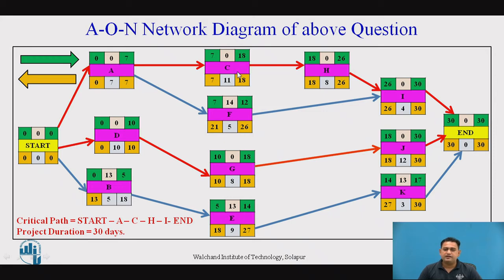Activity H starts when C finishes, so EST of H is 18. Activity I depends on both H and F, so its EST is the maximum of EFT of H (26) and EFT of F (12), giving EST of I as 26, and EFT of I as 26 plus 4 equals 30. EST of J is EFT of G = 18, so EFT of J is 18 plus 12 equals 30. EST of K is EFT of E = 14, so EFT of K is 14 plus 3 equals 17.